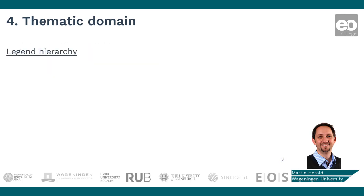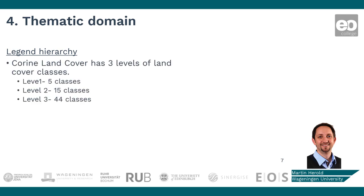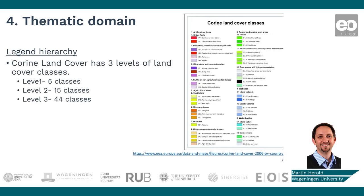Some land cover products also have a certain hierarchy. For example, the CORINE land cover from the European side has at the broadest level only five classes, and as you go into more detail, you have artificial surfaces, which are further discriminated into different land cover and land use types, and then even more detailed classes. All of these classes have definitions associated with them that are well documented in the descriptions of these land cover maps.